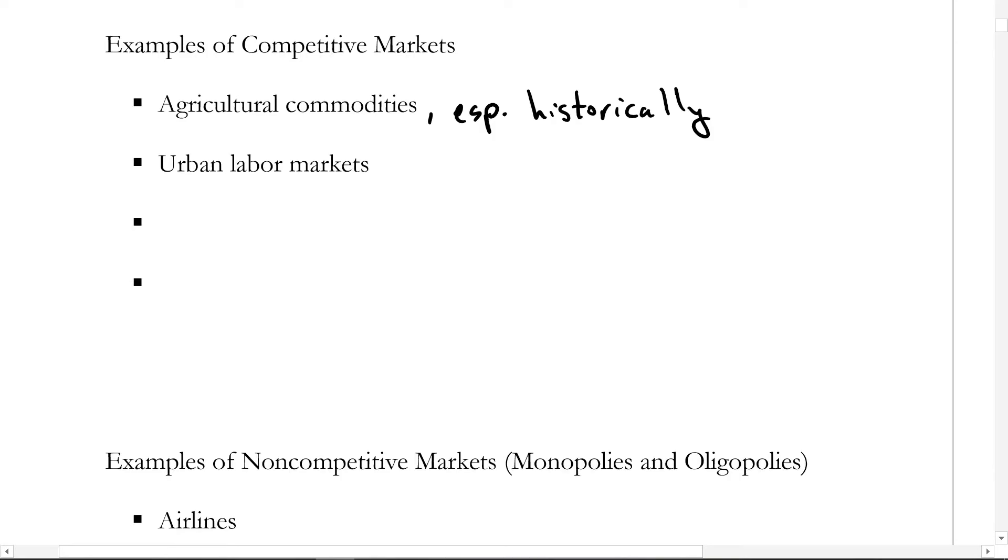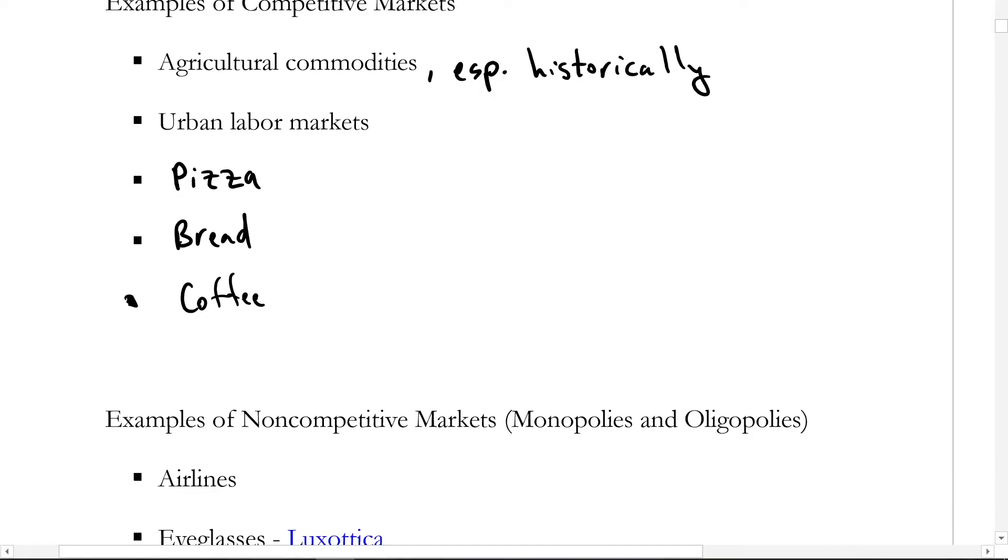A couple more examples. Let's take pizza. In most towns, and particularly in large cities, lots of sellers, certainly lots of buyers, and fairly similar products across the spectrum. Also bread in general. We could throw coffee in there, particularly retail coffee from a grocery store. We've got lots of brands to choose from and certainly lots of buyers.